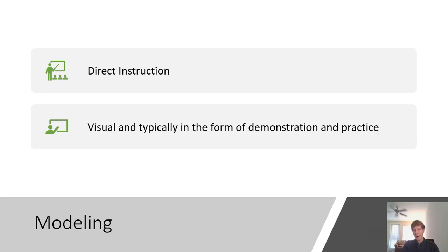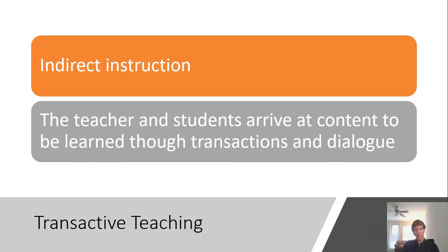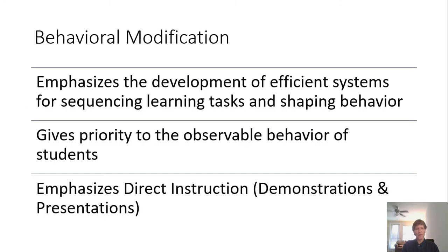With modeling, visual as well as verbal and other forms of modeling are very important to demonstrate practice. Then we get into indirect instruction, where the teacher and students arrive at content to be learned through transactions and dialogue. If we're talking about perennialism, that would include Socratic methods of dialogue. We also get into behavior modification — if it sounds like behaviorism, it is. It's often discussed as a classroom management technique, but it also relates to learning.